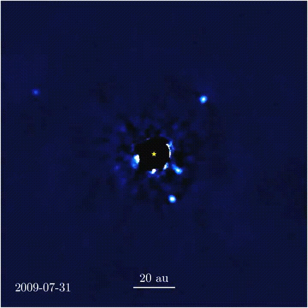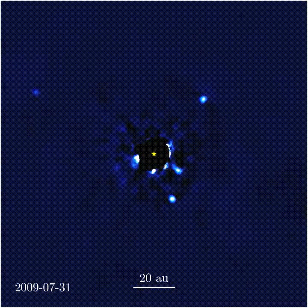Exoplanets have been discovered using several different methods for collecting or combining direct images to isolate planets from the background light of their star. Non-redundant aperture masking interferometry is a method of combining the views of multiple telescopes into a single image, while the other methods are algorithms for combining multiple direct images taken from the same telescope.